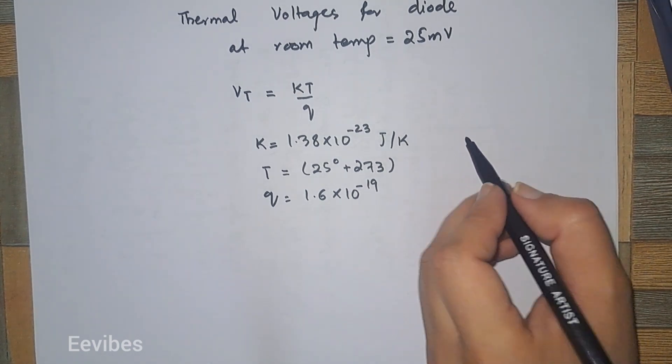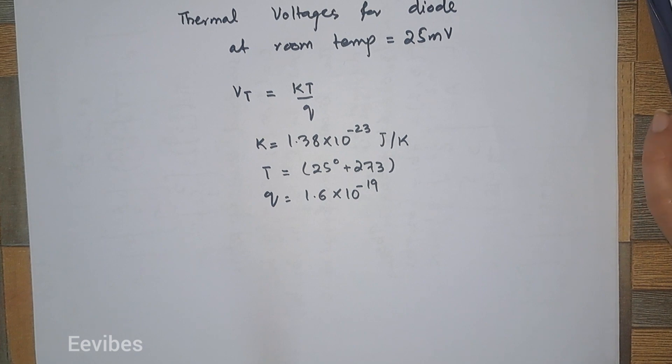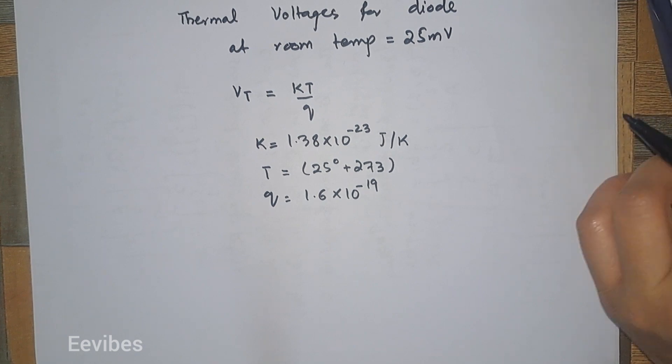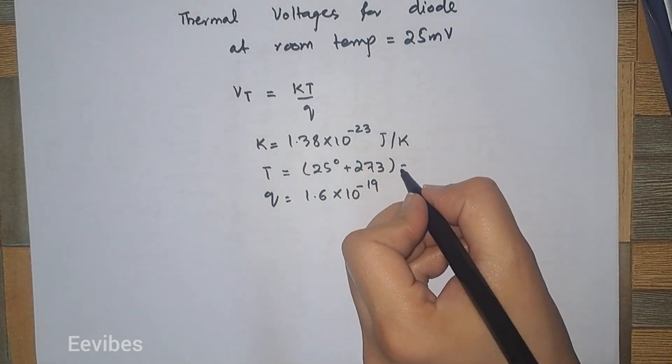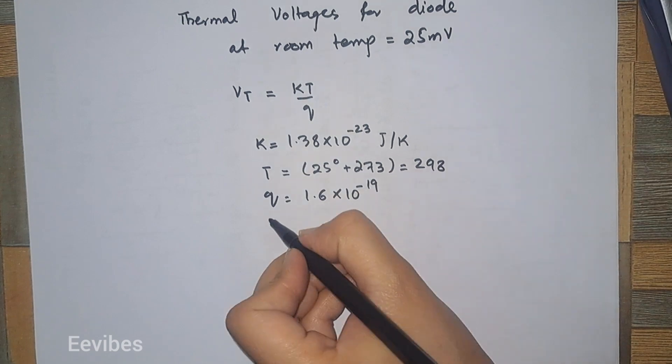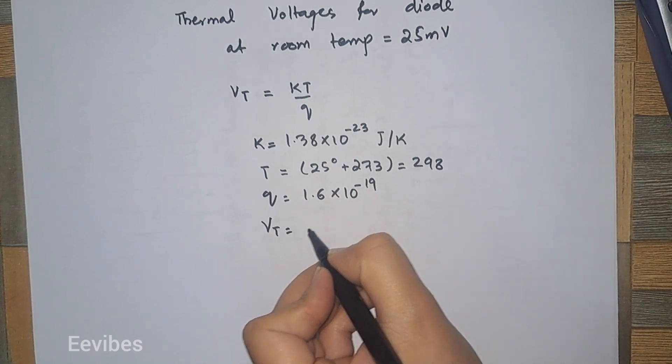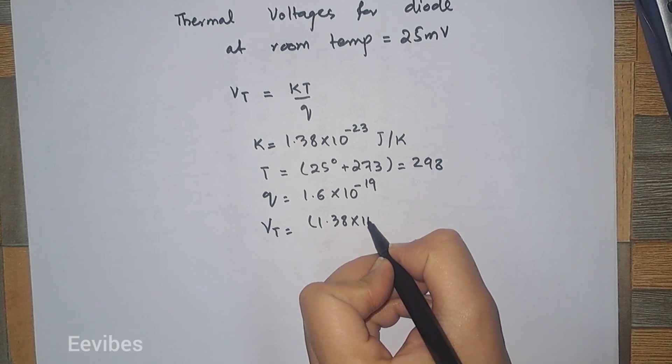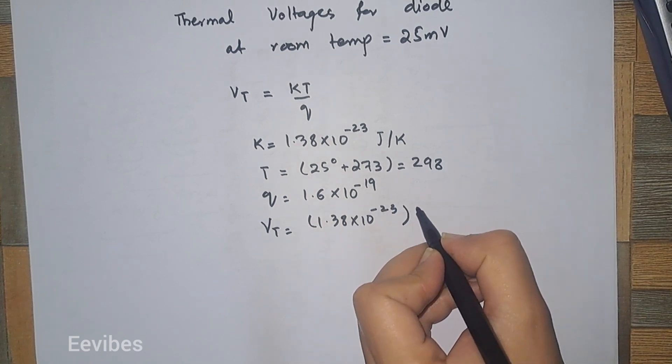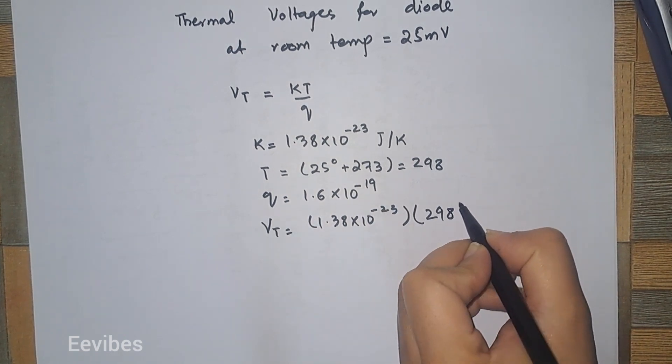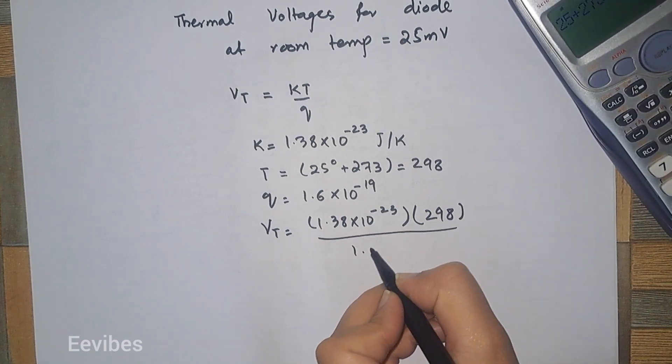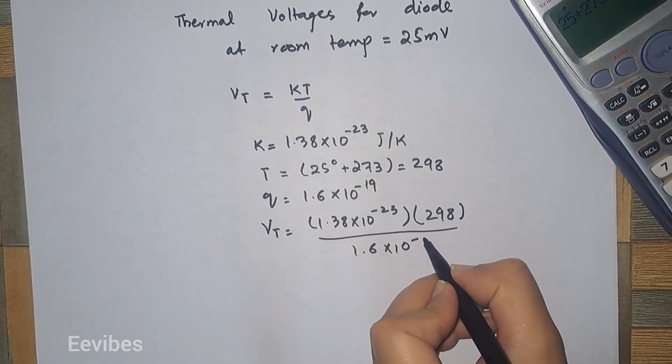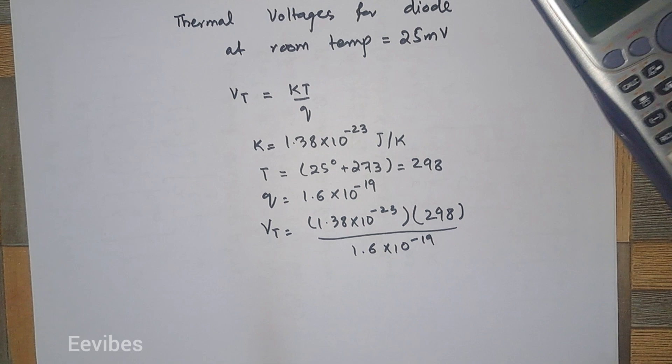this will become 298, and V thermal voltage is equal to 1.38 into 10 raised to power minus 23 into 298 divided by 1.6 into 10 raised to power minus 19. Let's simplify this expression.